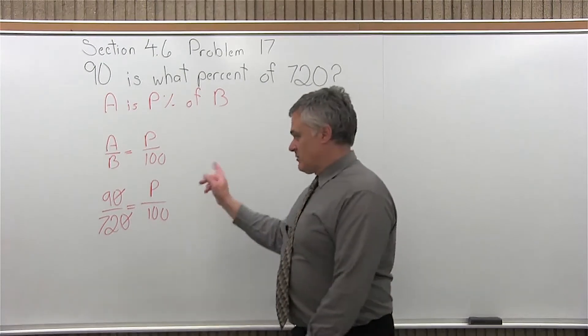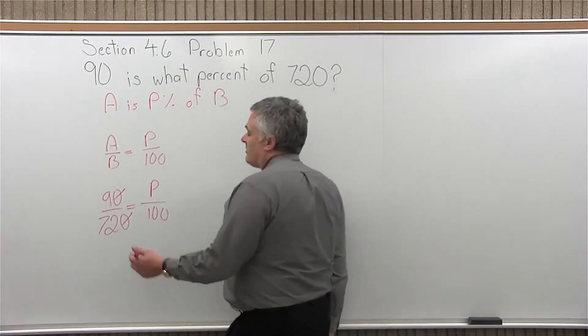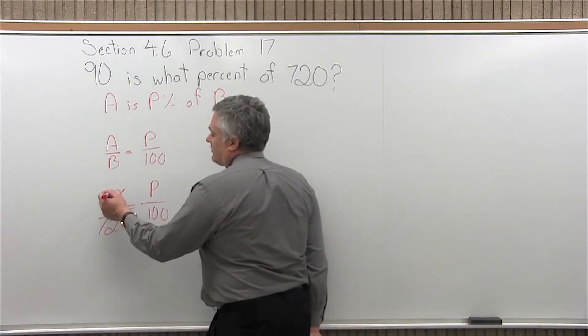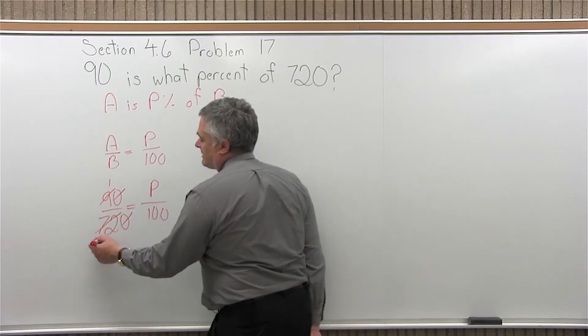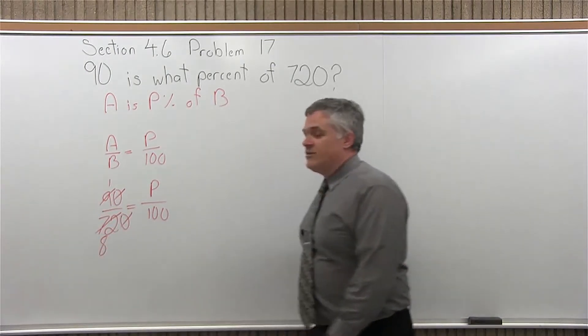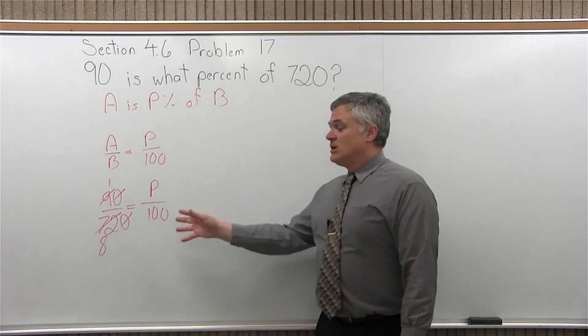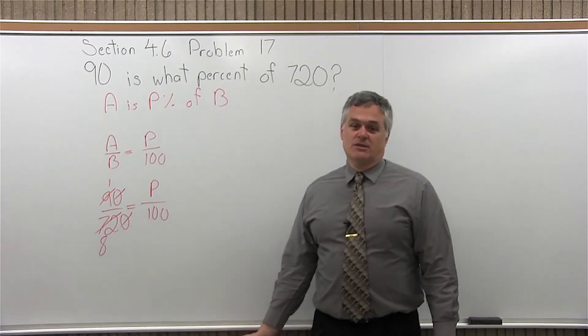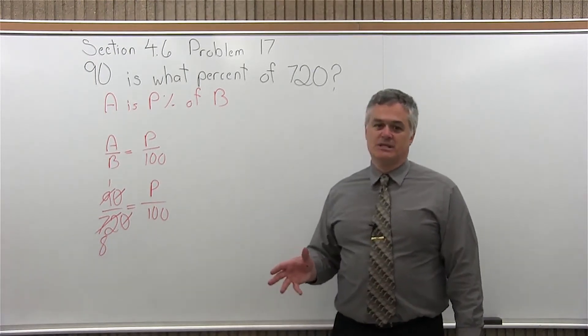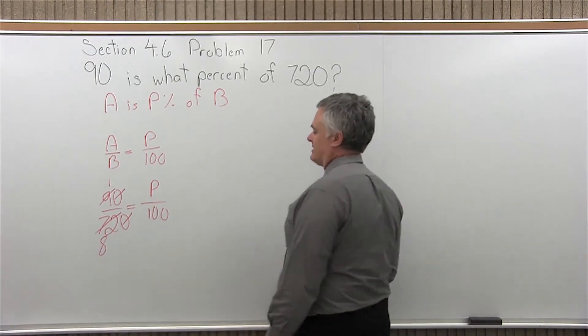You can go right from there, cross multiply, divide. You may or may not notice that it can be reduced a little further. 9 divides into 9 once. 9 divides into 72 eight times. If you notice that, you make the numbers a little smaller, even easier to deal with. If you don't notice, you'll still get the same answer in the end. With a little bit bigger numbers in the in-between steps, but the final answer will be exactly the same.